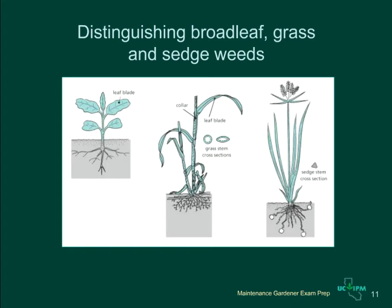Weeds are unwanted plants in the landscape. There are many weed species, but they can all be classified into one of three major groups. Broadleaves have wide to narrow leaves with net-like veins. Grasses have narrow leaves arranged in sets of two, with flattened stems. Sedges look like grasses; however, their leaves and flowers are arranged in sets of threes, and their stems are triangular in cross-section.